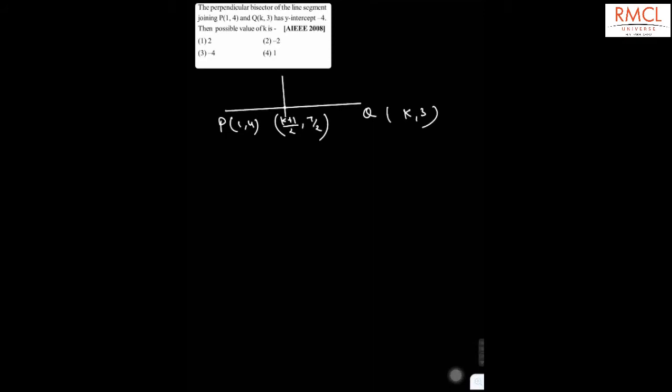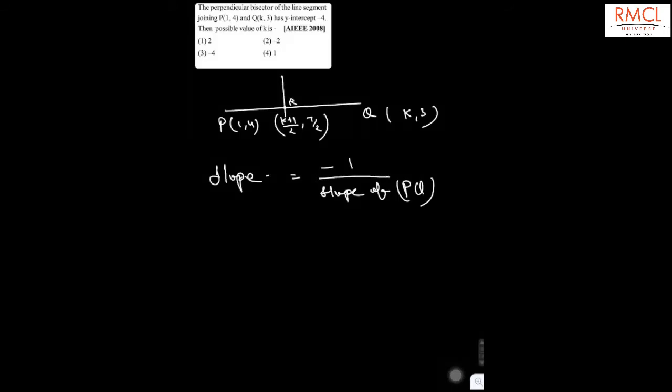Suppose this is the perpendicular bisector and this is point R. We can say that the slope of the perpendicular bisector will be equal to minus 1 upon the slope of PQ, and therefore it will be k minus 1.